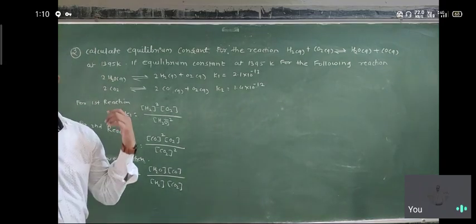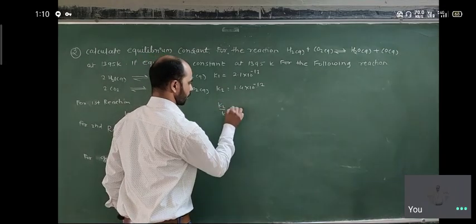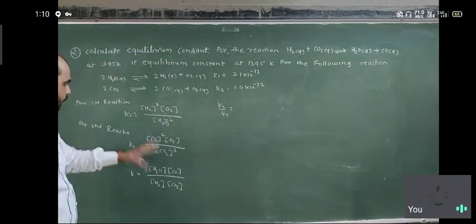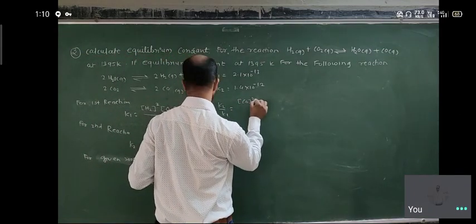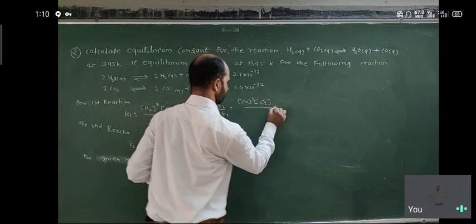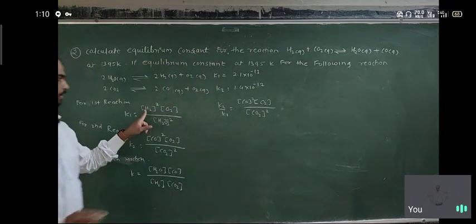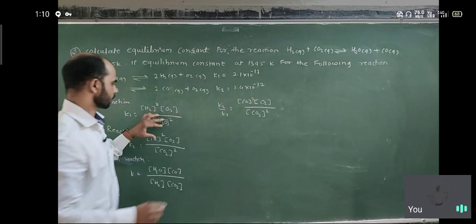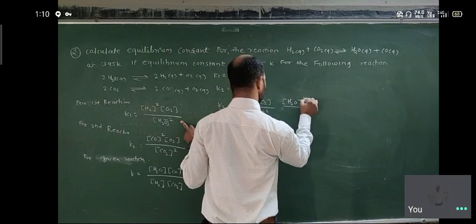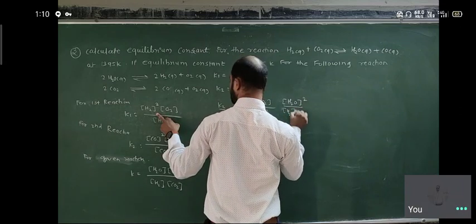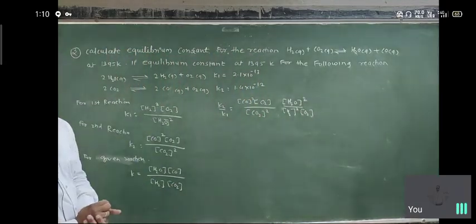We consider the ratio K2 upon K1. For K2 the expression involves CO and CO₂, and for K1 we change it proportionally so the denominator contains H₂O squared upon concentration of H₂ times concentration of CO₂. This gives us K2 upon K1.